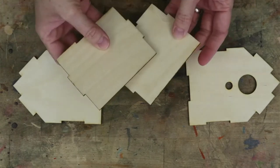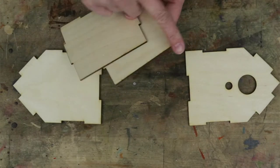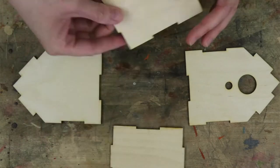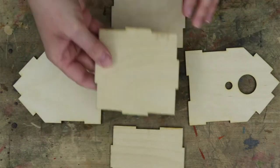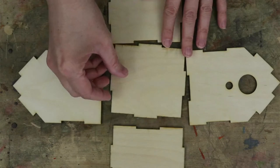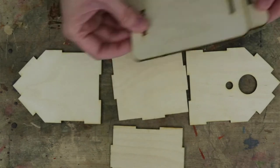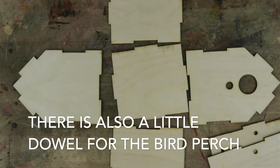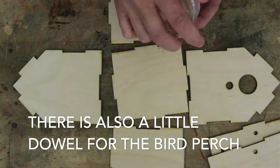We have the two side walls which you can recognize because they have one straight side. We have the floor and two pieces of the roof and we're going to stick them all together using wood glue.